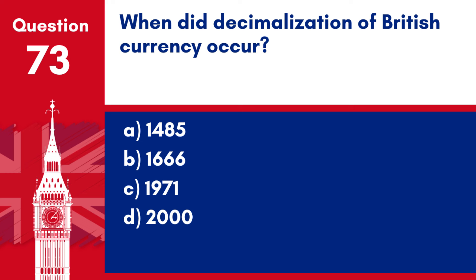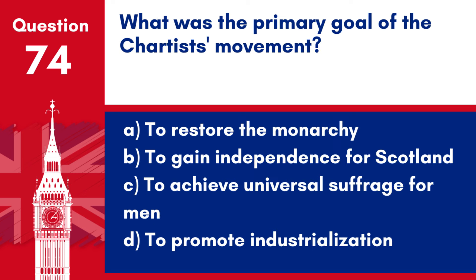Answer: c. 1971. The UK decimalised its currency on 15 February 1971, moving from pounds, shillings and pence to a system based on pounds and pence.